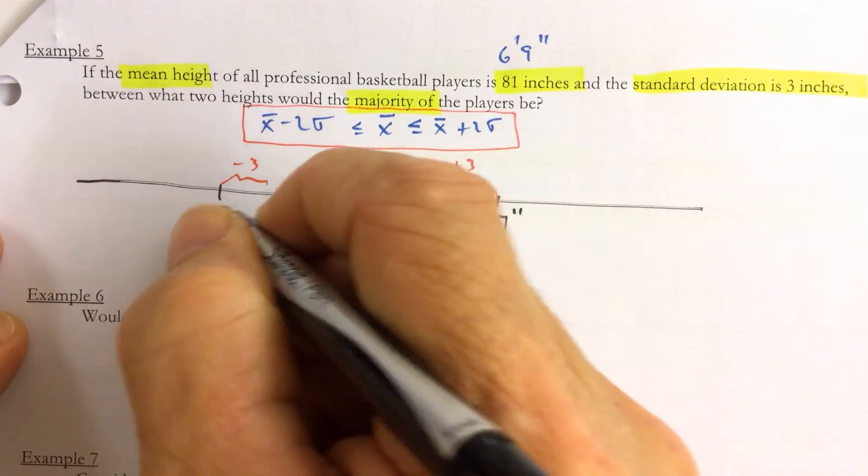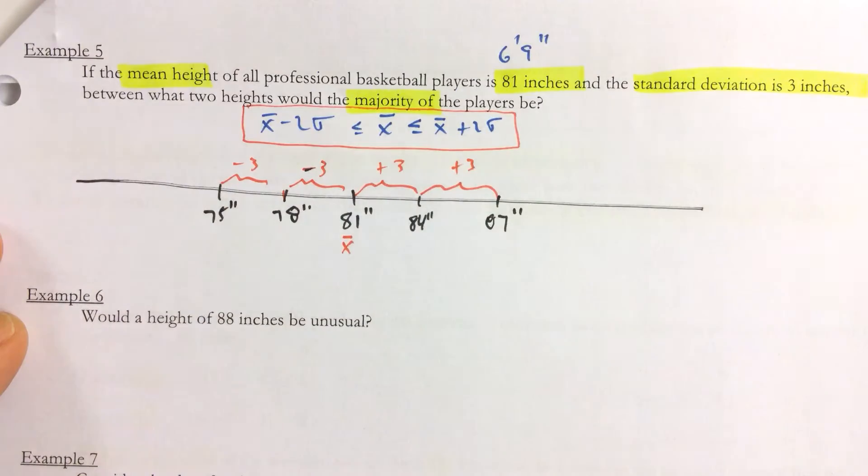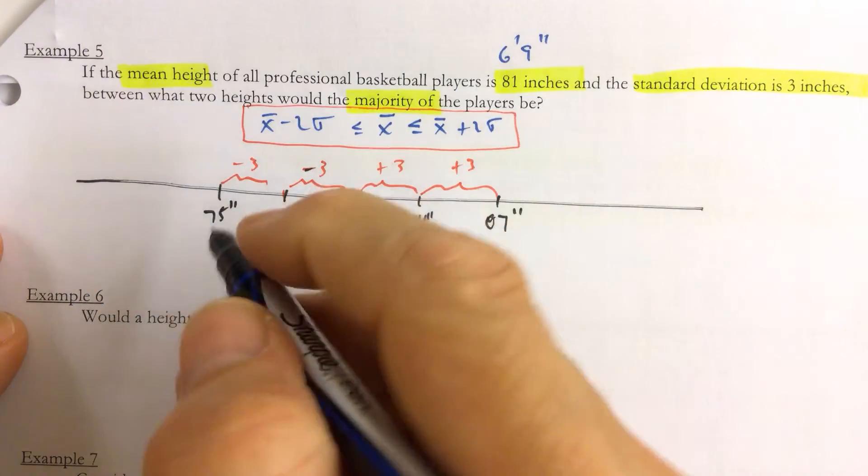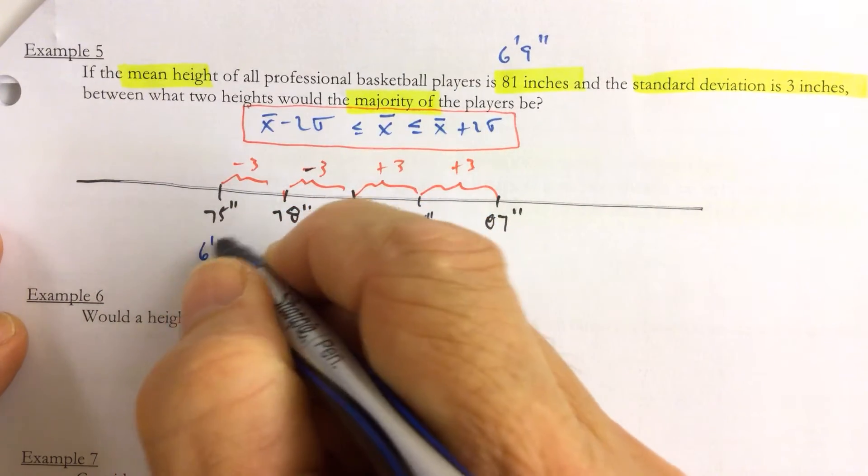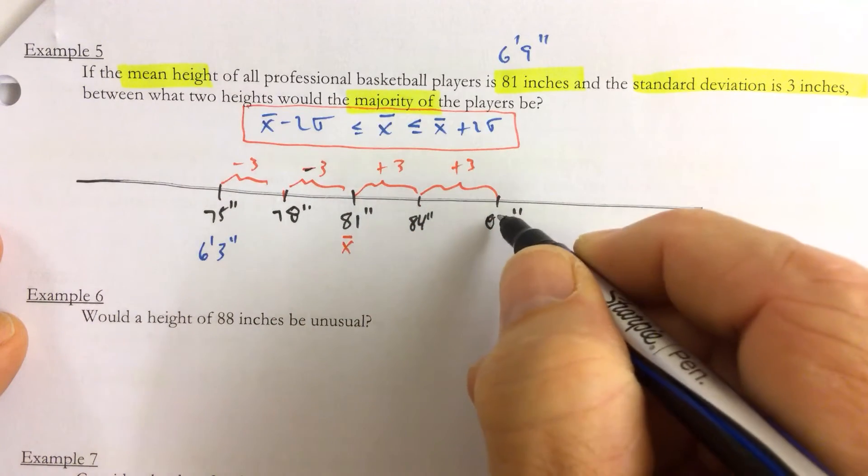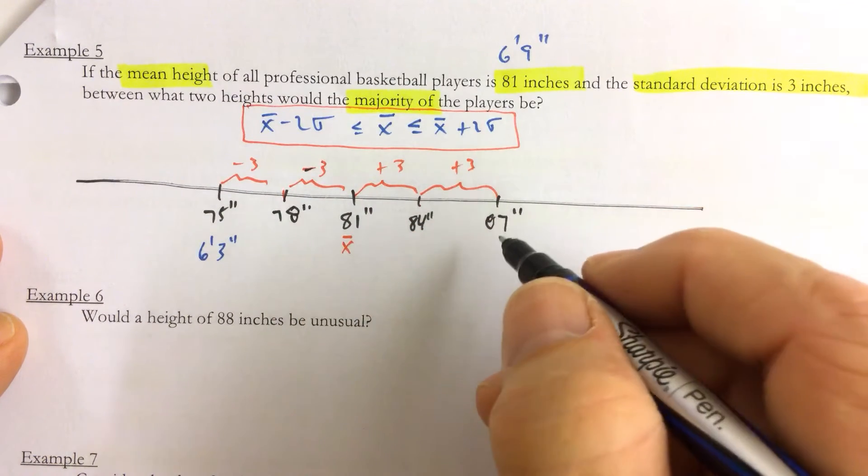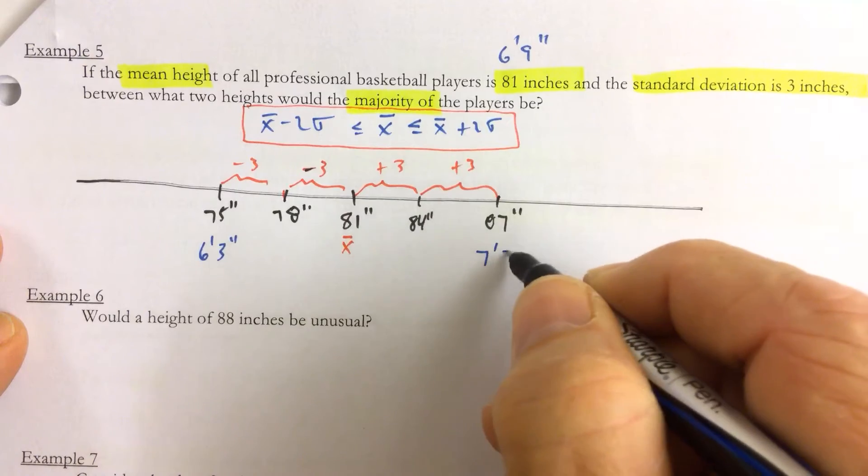And then 75 inches. So 75 inches is six foot three inches tall, and 87 inches is seven foot three inches tall.